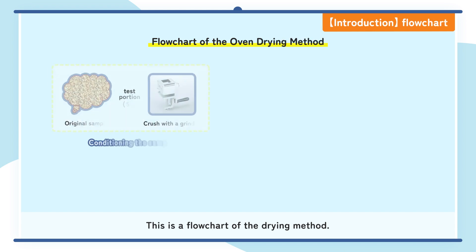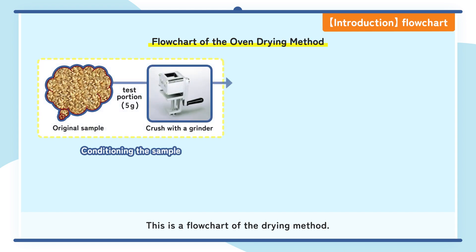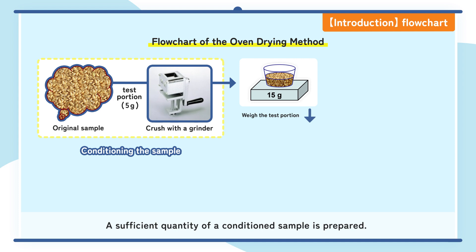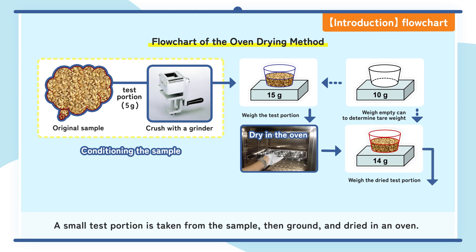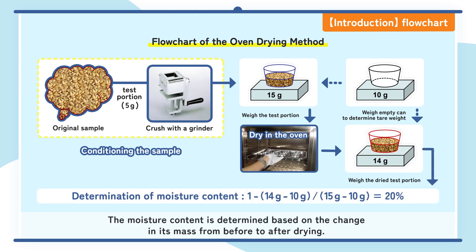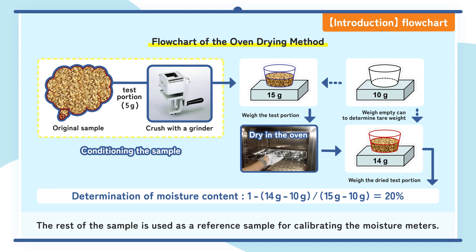This is a flow chart of the drying method. A sufficient quantity of a conditioned sample is prepared. A small test portion is taken from the sample, then ground and dried in an oven. The moisture content is determined based on the change in its mass from before to after drying. The rest of the sample is used as a reference sample for calibrating the moisture meters.